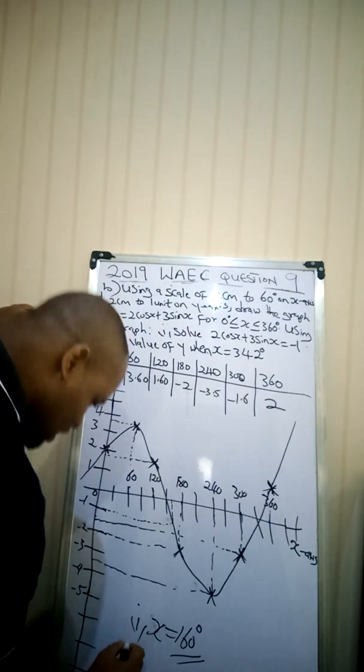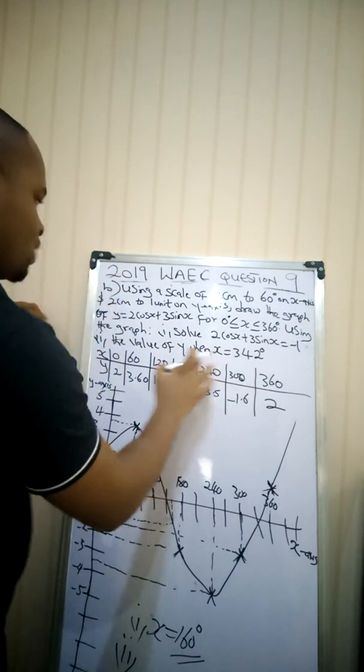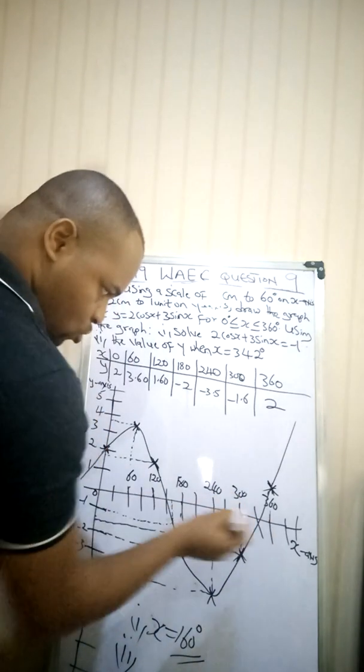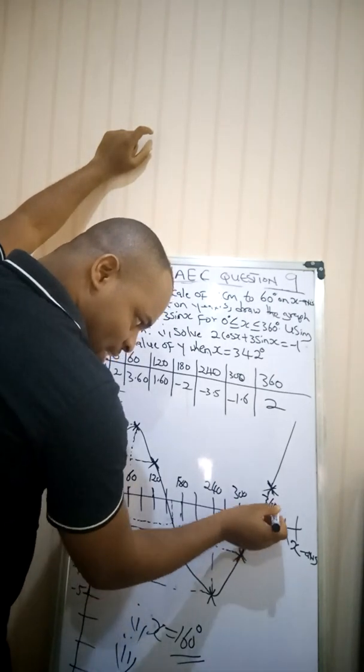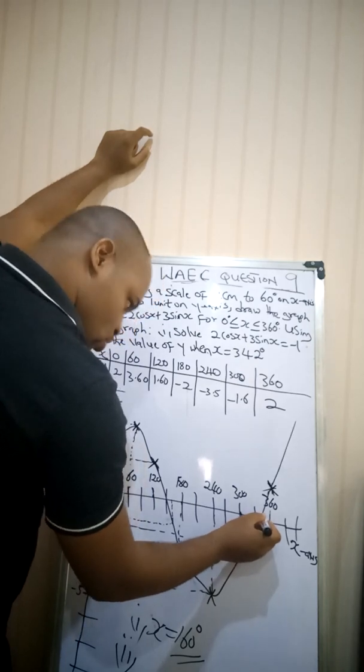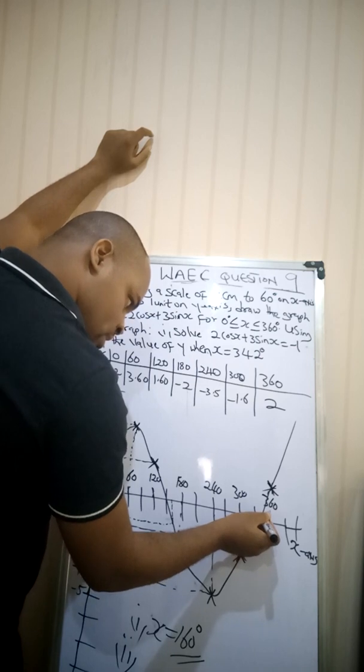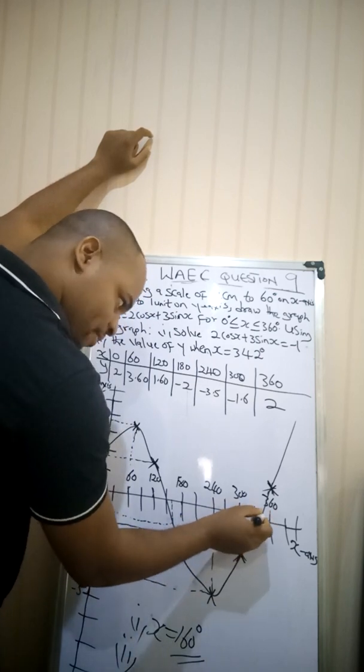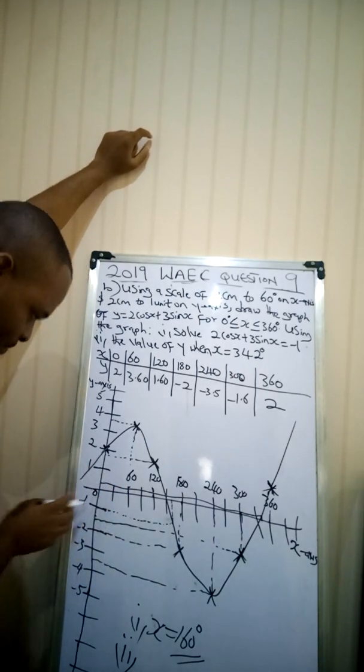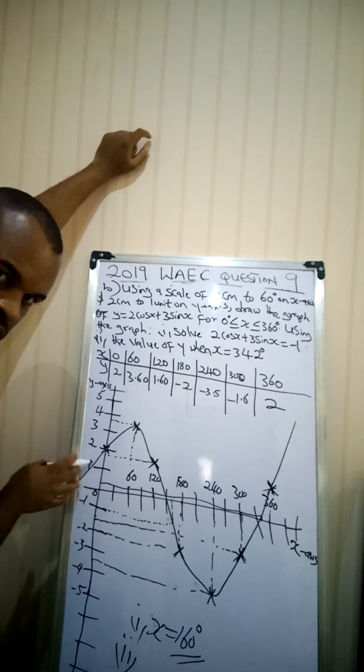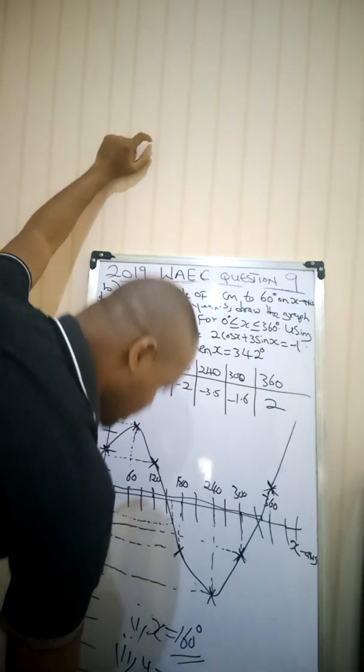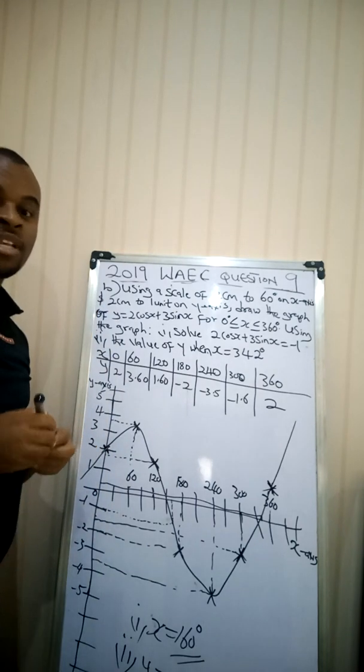Then the second one says when x is 342. So trace, this is 300. In between is 330. So 342 would be between 330 and 360. So I'm close to 330. So let's assume 342 is here. This is my 342, my x value. Place it on this point to where it touches this graph. And then read the value. Just drag it to the value of y and then you read the value here. So if this is 1, this is 0, it's close to 0. That is less than 0.5. So let's assume my y is 0.3. Alright. So now that's the solution for question 9.